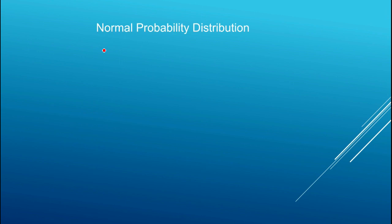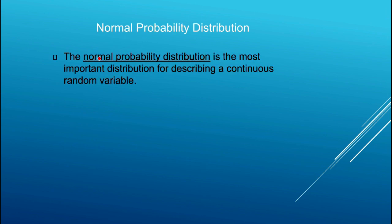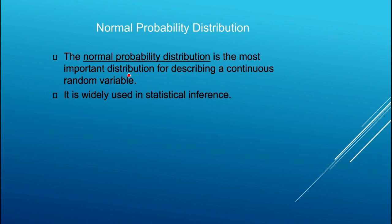The normal probability distribution is probably one of the most important distributions in all of statistics. It's a distribution that's used in the derivation of many other important distributions, such as the chi-squared distribution or the f-distribution. It's also widely used in statistical inference, particularly if you have a large sample — you can often use the normal distribution for hypothesis testing and other statistical inference that we will talk about later in this course.